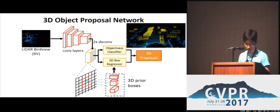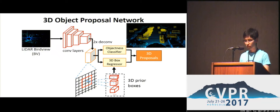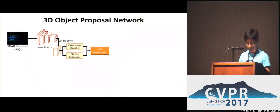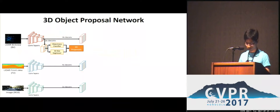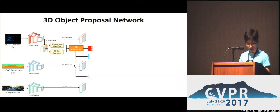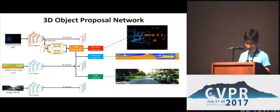A set of 3D prior boxes are defined and shared across all the spatial predictions. Meanwhile, we use two sub-networks to extract features from the LiDAR front view and RGB image respectively. We then project the 3D proposals to the feature maps of each view.